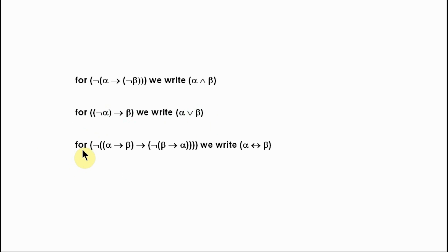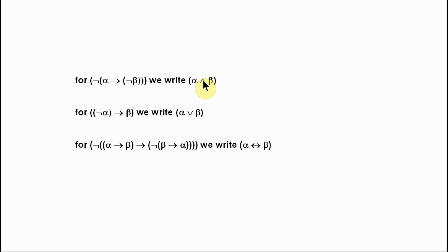The third symbol I'm going to introduce is this double-headed arrow. Wherever a lengthy expression of this form appears — whatever the wffs alpha and beta might be — we are going to be able to substitute a string of symbols involving this double-sided arrow standing in the middle. These new symbols are effectively being introduced by definition — simply shorthand for longer expressions involving just our primitive connectives, which is to say the arrow and the negation sign, the L on its side.